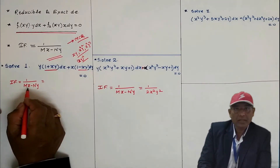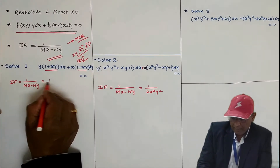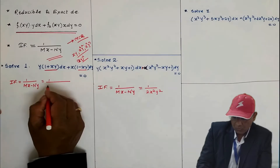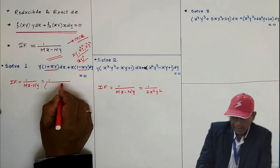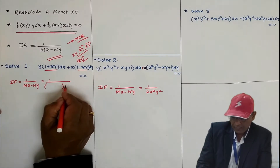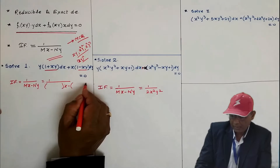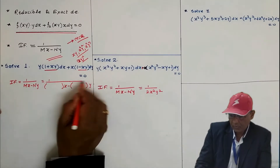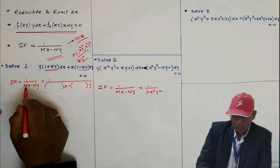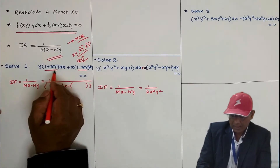Now what is m? In mx − ny, m is the coefficient of dx.